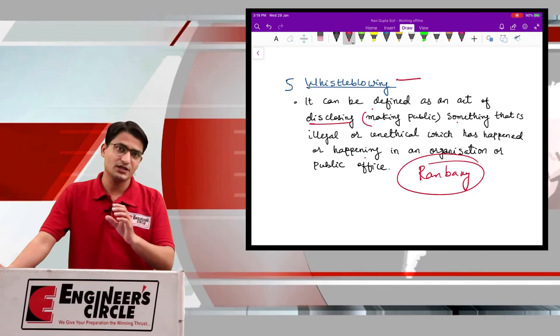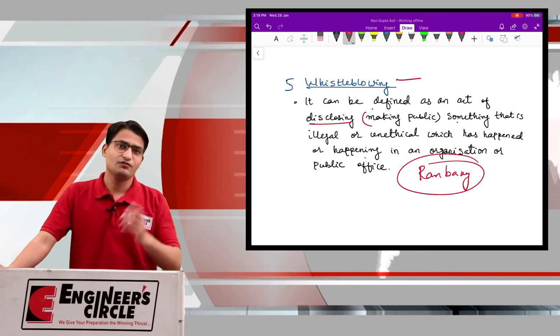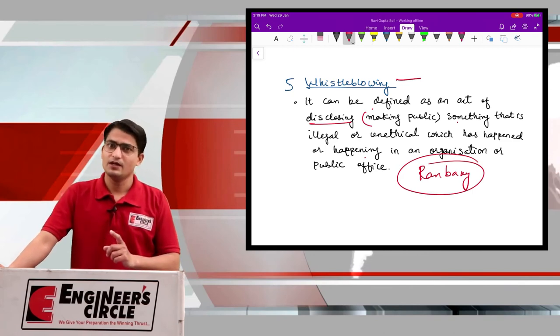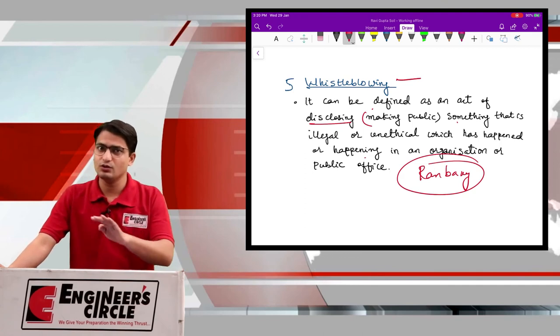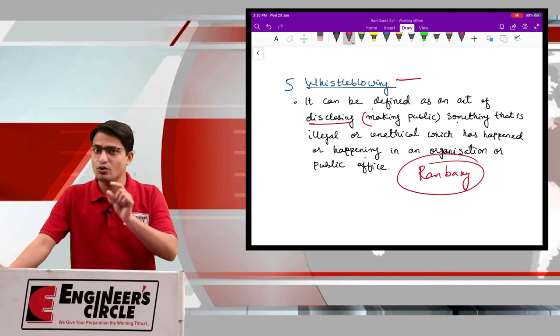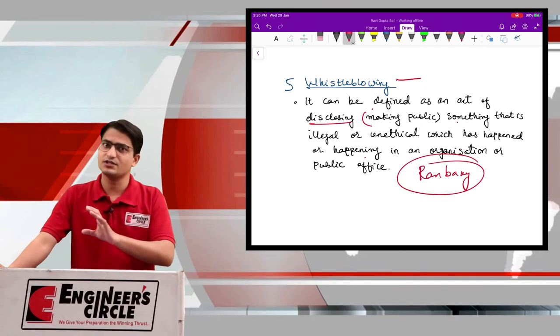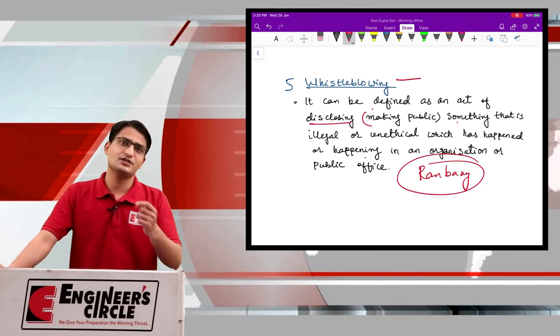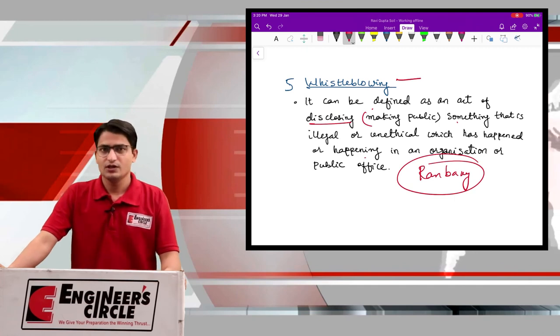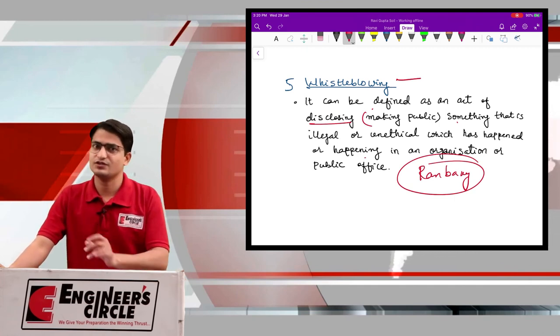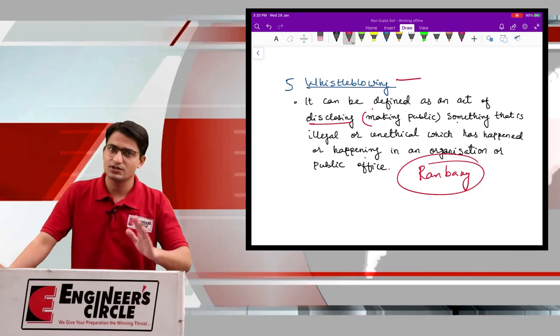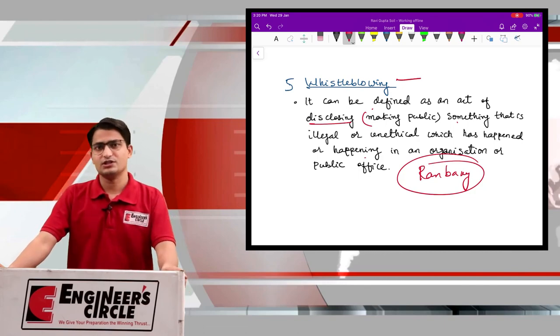So the person is sacrificing for the larger good. Here, negative consequences are happening for the person because he will lose the job, but he is more caring about, he is more concerned about the whole society. That's why he is disclosing the information. So this was our next ethical issue, that is whistleblowing. We will take some more ethical issues. Thank you.